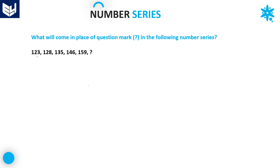See this first question. The numbers given are 123, 128, 135, 146, 159 — what will come in place of the question mark in the following number series? If you observe carefully, all the given numbers 123, 128, 135, 146, and 159 are very nearby numbers, so there is a good chance that the pattern involves additions.